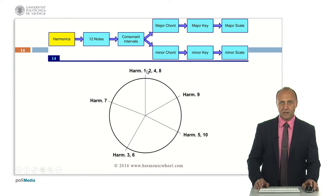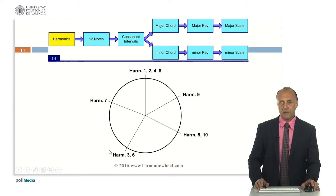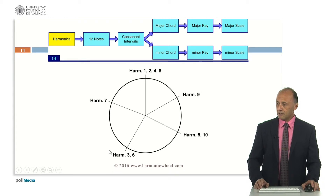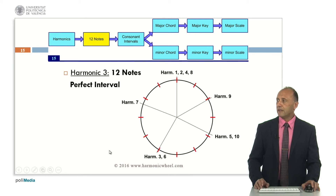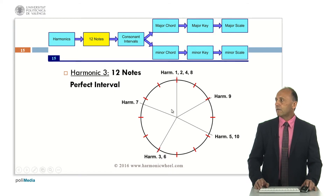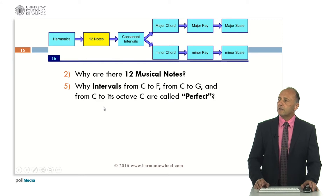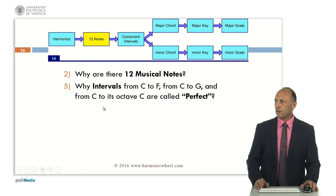After harmonics 1 and 2, the most important one is harmonic 3. If we want to divide the chromatic circle in such a way that one of the divisions coincides with harmonic 3, we obtain 12 divisions, that is 12 notes. This note is very close to harmonic 3, so the intervals from harmonic 3 to harmonics 1 and 2 are called perfect. So we have the answers to why there are 12 musical notes and why intervals from C to F, from C to G, and from C to its octave C are called perfect.